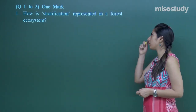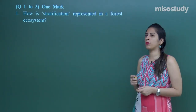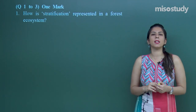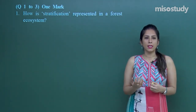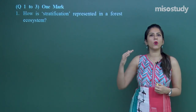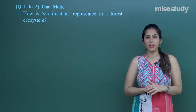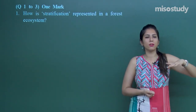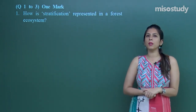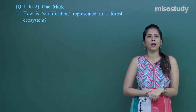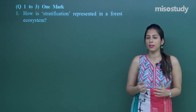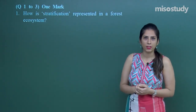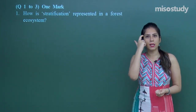Question number one: how is stratification represented in a forest? Stratification means vertical layers are present. For example, if you are flying on a plane and passing through a forest, you will see only a dense canopy of trees — you will not be able to see the herbs, shrubs, and grasses below. Similarly, a monkey sitting on a tall emergent tree can see certain small trees below.